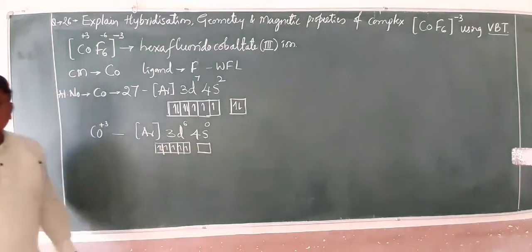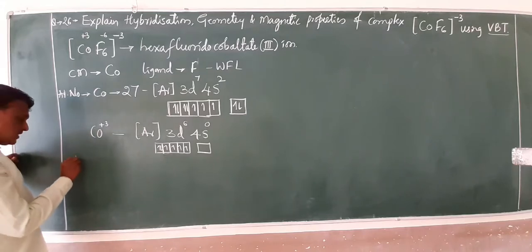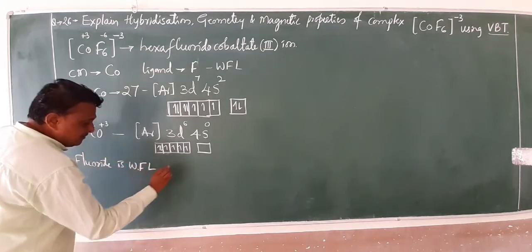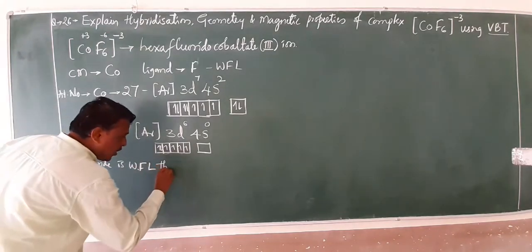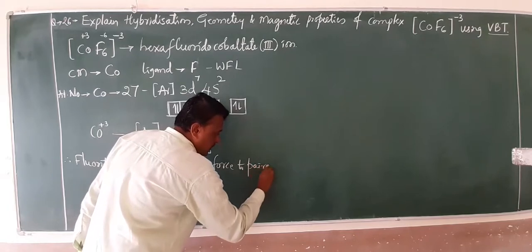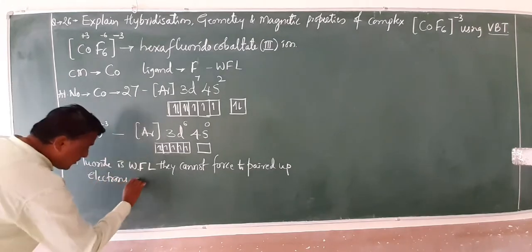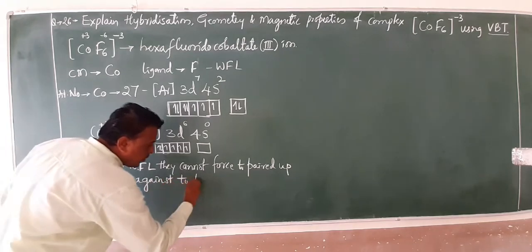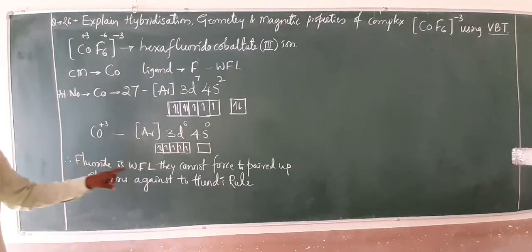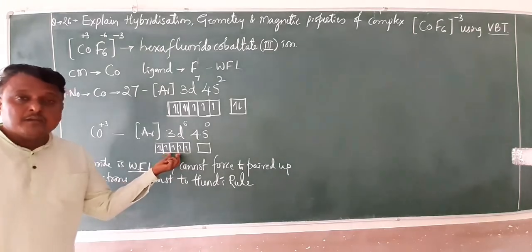Keep yourself just here. Fluoride is weak-field ligand, and due to weak-field ligand, they cannot force to pair it up. Already known in your valence bond theory, fluoride is weak-field ligand. They cannot force to pair it up. The electrons again follow Hund's rule. The electrons retain same after complexation also.